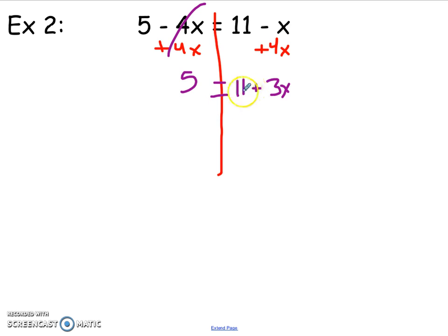Now I need to undo the addition and subtraction. So to get rid of adding 11, I'm going to subtract it from each side. That's going to give me, if I have 5, I owe 11, I still owe 6. The inverse of multiplying by 3 is dividing both sides by 3. So x equals a negative 2.